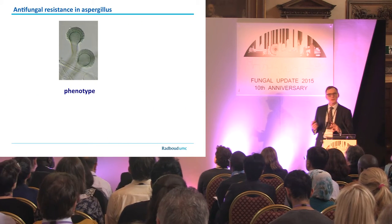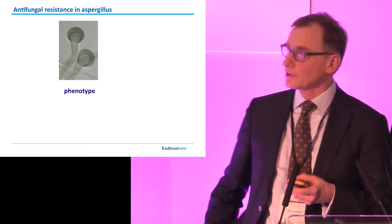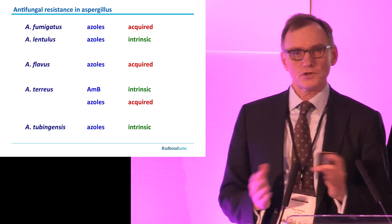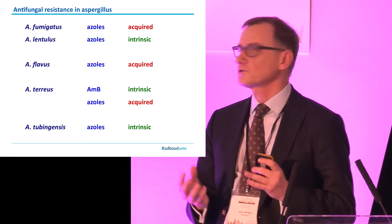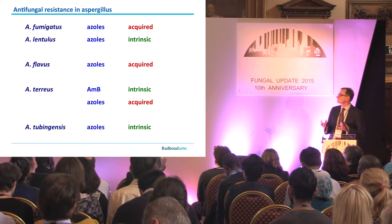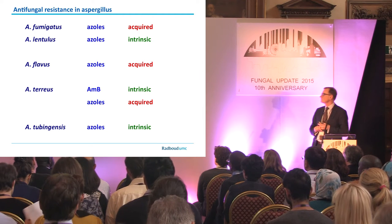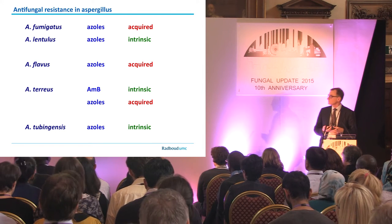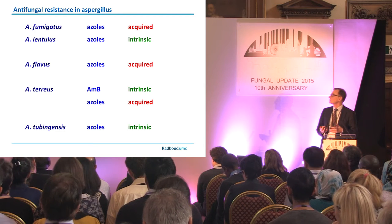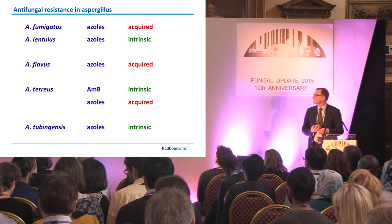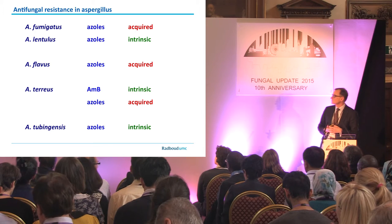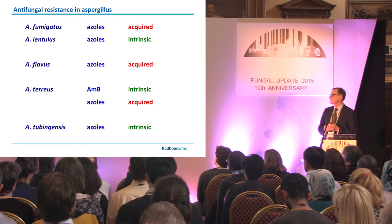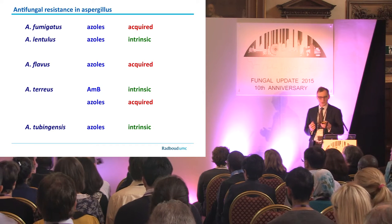I want to discuss the background of azole resistance in Aspergillus, starting with the phenotype. If you think about resistance, you have two types: intrinsic resistance — where all members of a species are resistant or less susceptible, for instance Aspergillus lentulus and tubingensis (formerly niger) where azoles are less active — and acquired resistance, which has been documented in Aspergillus fumigatus, also in Aspergillus flavus and Aspergillus terreus for azoles.